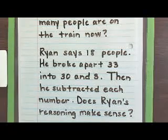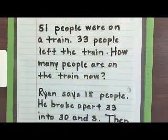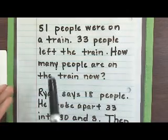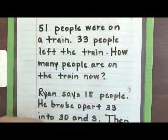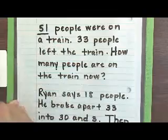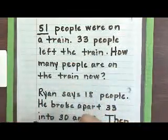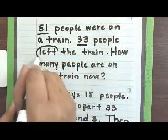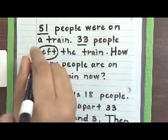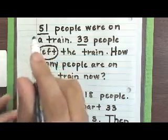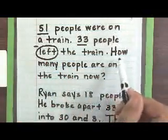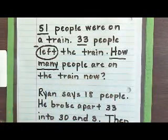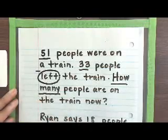Let's go through and do our underlining and circling. We already read it the first time. Now we read sentence by sentence: '51 people were on a train' — the important information we pull out is 51. '33 people left the train' — we need the number 33 and the key word 'left,' which tells us we are subtracting since the people are no longer there. Then 'how many people are on the train now' — we need 'how many.' By doing our underlining and circling, we have our equation: 51 minus 33 equals we don't know how many yet.